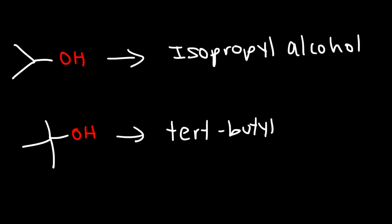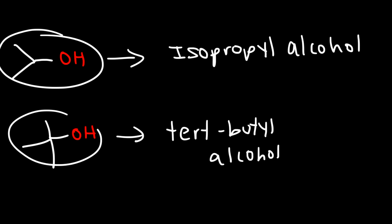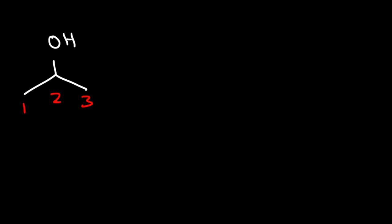Now let's go over the IUPAC nomenclature for these two alcohols. You can draw isopropyl alcohol like this. If we number it, this is going to be one, two, three. The OH group is on carbon two, and we have a three-carbon chain. So instead of saying propane, it's going to be propanol — it has the suffix -ol. And the OH group is on carbon two, so this is called 2-propanol.